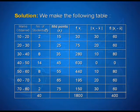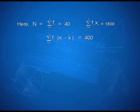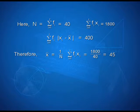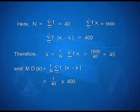Now let us look at the computation. Here, n = Σfi = 40, Σfi×xi = 1800, and Σfi×|xi − x̄| = 400. Therefore, x̄ = (1/n)×Σfi×xi = 1800/40 = 45. Mean deviation about mean = (1/n)×Σfi×|xi − x̄| = 400/40 = 10. Therefore, the mean deviation is 10.